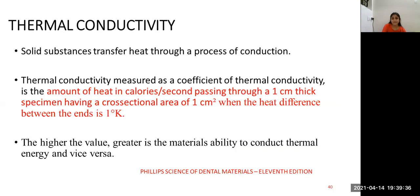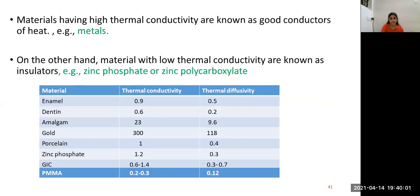Solid substances transfer heat through a process of conduction. Thermal conductivity is measured as the coefficient of thermal conductivity, which is the amount of heat in calories per second passing through a one centimeter thick specimen having a cross-sectional area of one centimeter square when the heat difference between the ends is one degree Celsius. The higher the value, greater the material's ability to conduct thermal energy and vice versa. Materials having high thermal conductivity are known as good conductors of heat, for example metals. On the other hand, materials with low conductivity are known as insulators, for example zinc phosphate or zinc polycarboxylate.